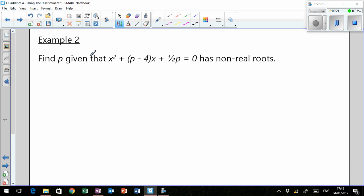Second example, find P, given that quadratic there, has non-real roots. Non-real roots we know happens when there's no real roots, which is what happens when your discriminant is less than zero. So again, we're solving a quadratic inequality. We know this quadratic has non-real roots. We want to find out what P is.